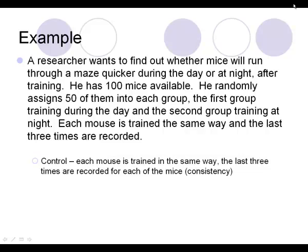Control: each mouse is trained in the same way — we're controlling outside elements other than the one we're testing for. The last three times are recorded for each mouse. This is consistency; we're not recording the first time for one mouse and the last time for another. We're recording the same measure — the last three times — for each of the mice.